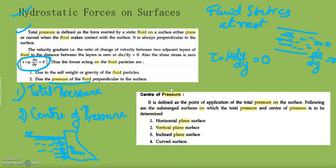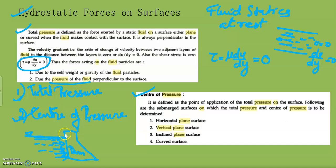Just as total gravity force acts at the center of gravity, the total pressure acts at a specific center point called the center of pressure. So for each case, we need to find both the total pressure and the center of pressure. Different types of surfaces can occur in fluid-related structures.